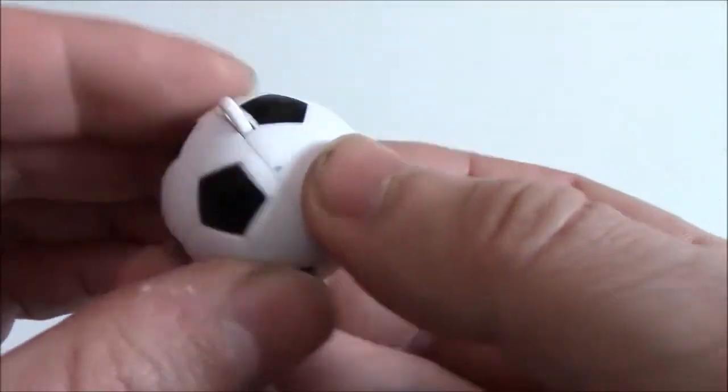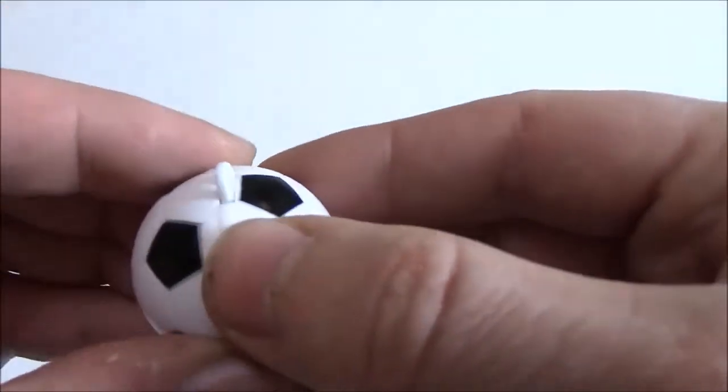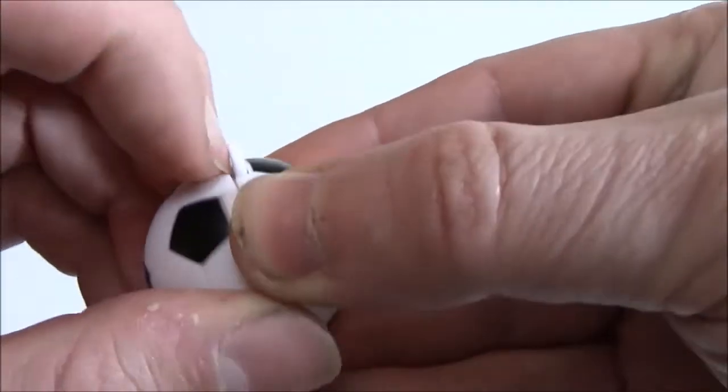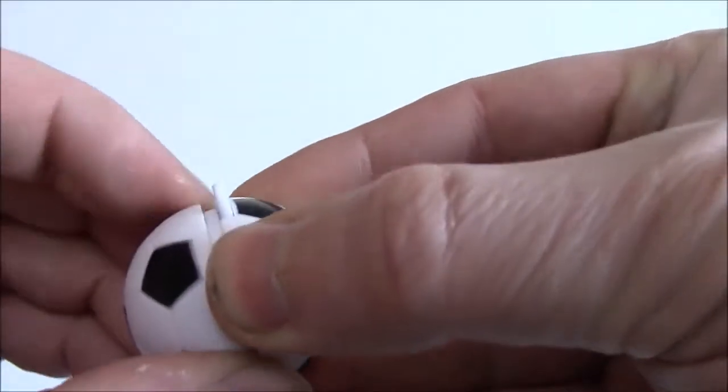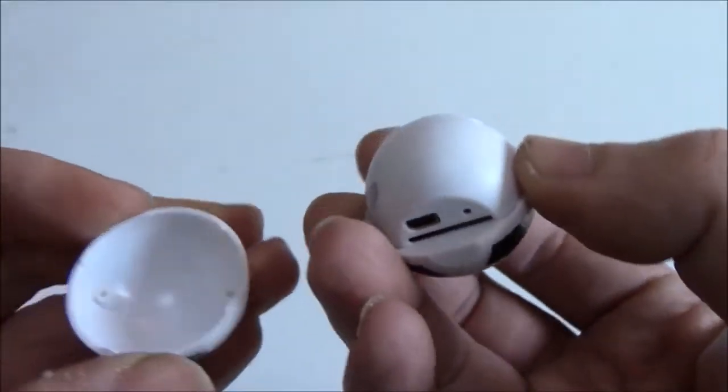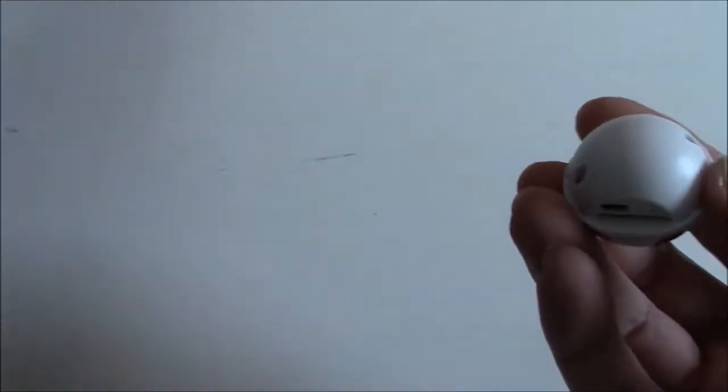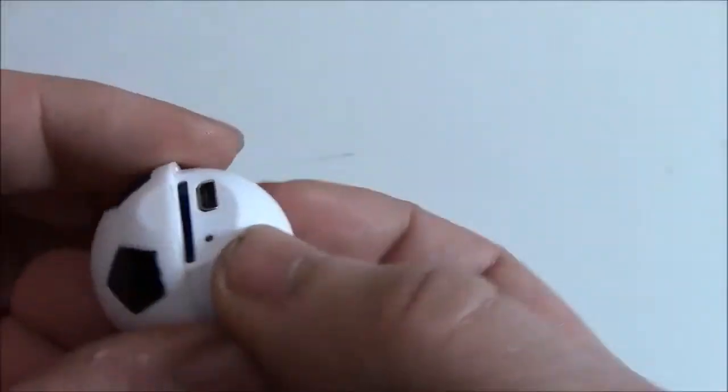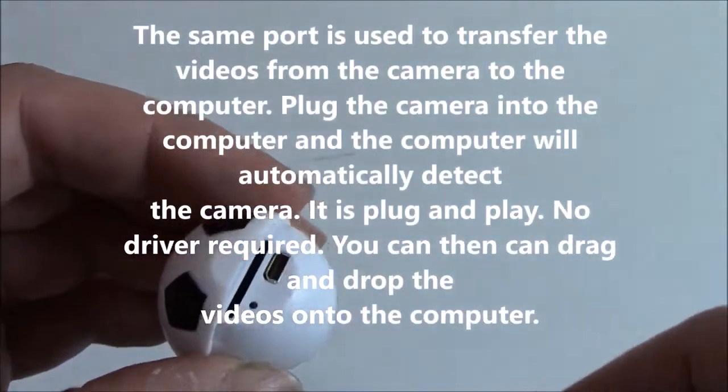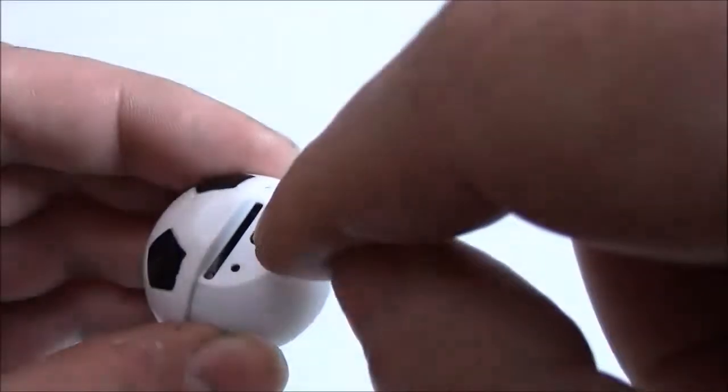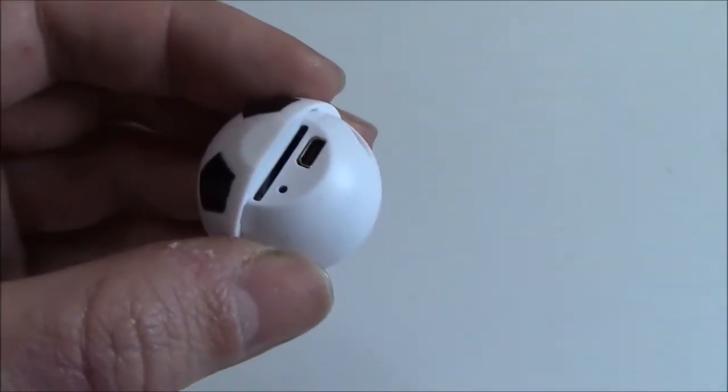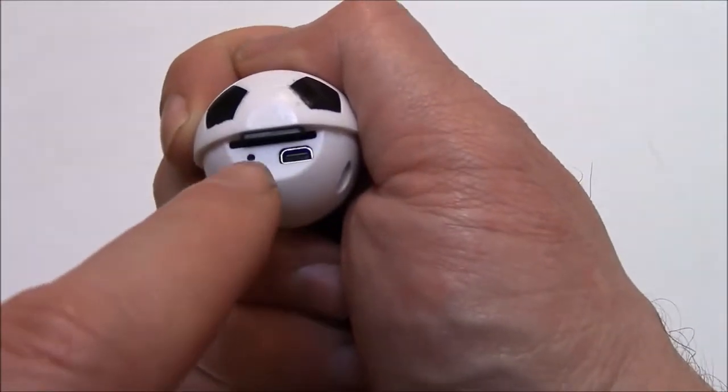Let's take a look at the camera. To charge it you have to separate it, so basically just pull it apart like so. Right here is the charger port, also used to connect to the computer. Right over here is the memory card slot, this uses a micro SD card. And right here is the reset button.